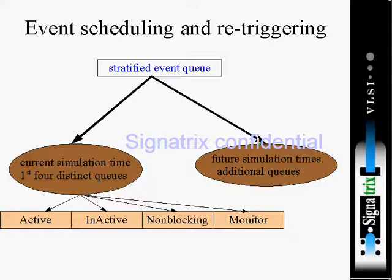Cycle-based simulators do not wait for any event; they only wait for one cycle. That is why they are called cycle-based simulators — they are only waiting for a cycle, not for any other signals. Cycle-based simulators are much faster than event-based simulators.